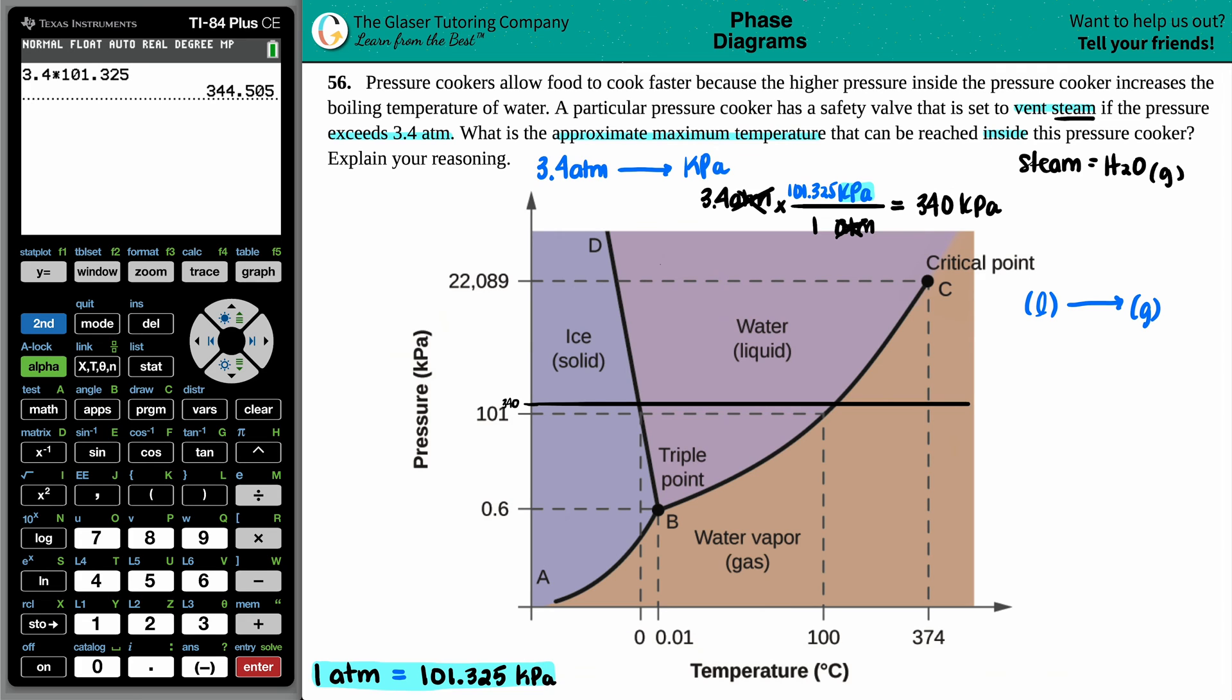So now we just have to basically find this temperature, because at this boiling point, once you produce the gas, that safety valve is going to go off to vent that steam off of the pressure cooker. So we need to find this temp at vaporization. So I'm looking for the temperature in which the liquid water goes into the vapor water.